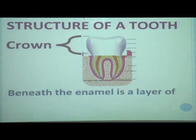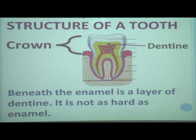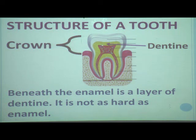Beneath the enamel is a layer called dentine. Dentine is not as hard as enamel. You can see in the diagram — the outer layer is enamel, and just beneath it is the layer of dentine.